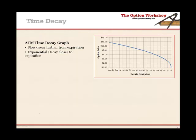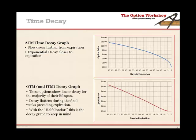Let's talk about time decay a little bit. This is the time decay graph that everyone knows and loves — slow rate of decay here is our option price, and here are the days to expiration. We can see a very slow rate of decay further out from expiration, and then it explodes towards expiration and decays within seconds, it seems like. The important thing to remember is that this is the at-the-money time decay graph. In this particular trade, we're selling out-of-the-money options, so our decay graph looks something more like this — these out-of-the-money options are actually decaying at a more linear rate.